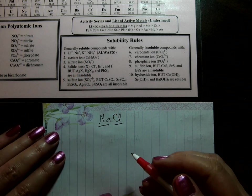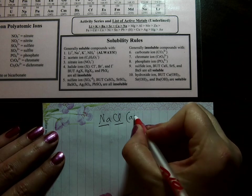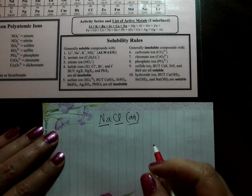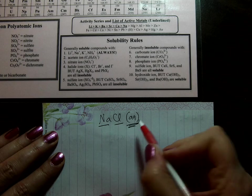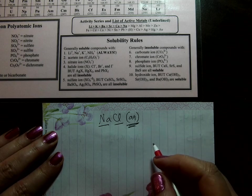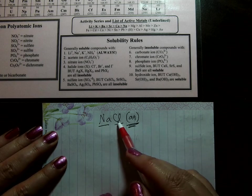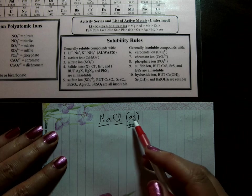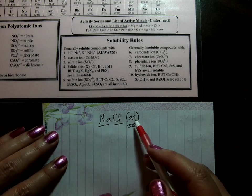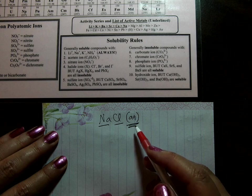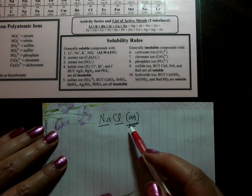Now when something is soluble, it gets an AQ after it. AQ means dissolved in water. For ionic compounds, like sodium chloride, it means dissolved and ionized or dissociated in water, depending on what the substance is.